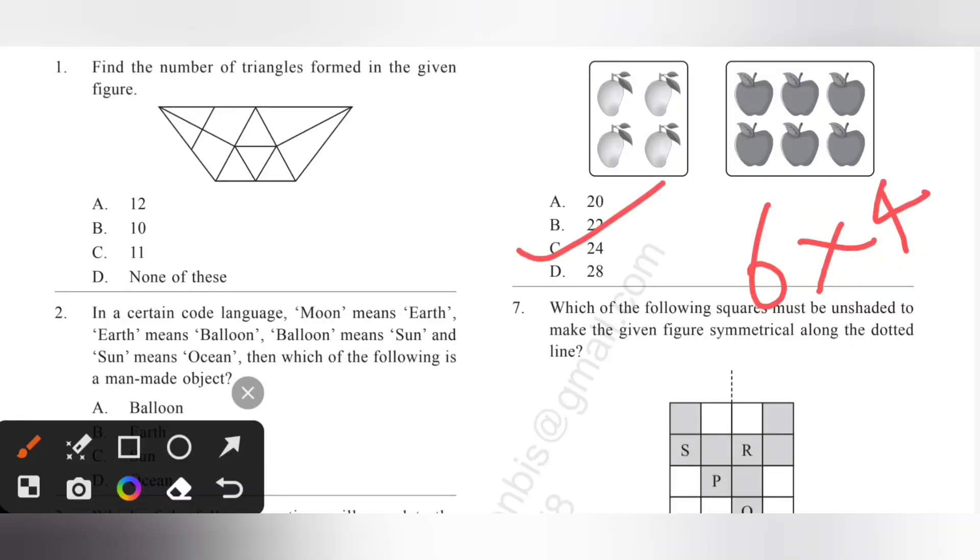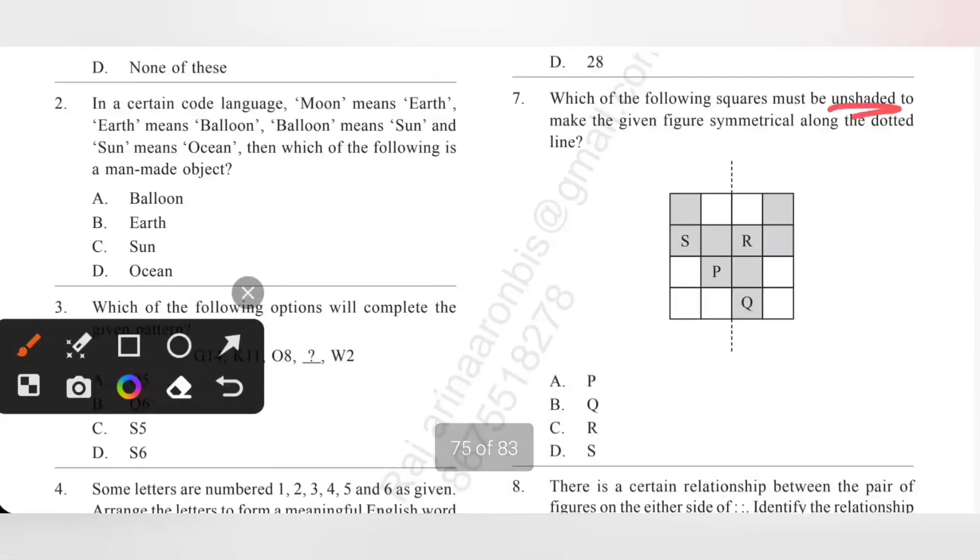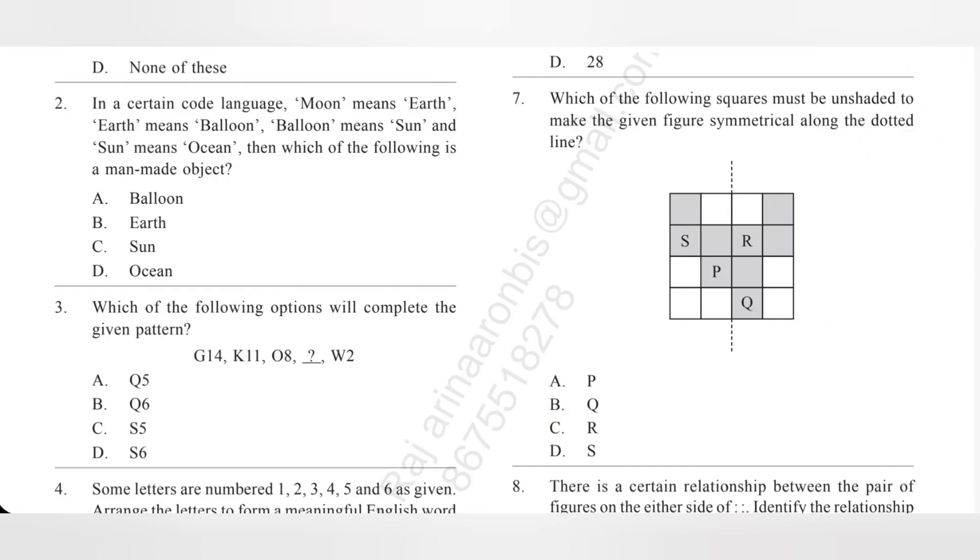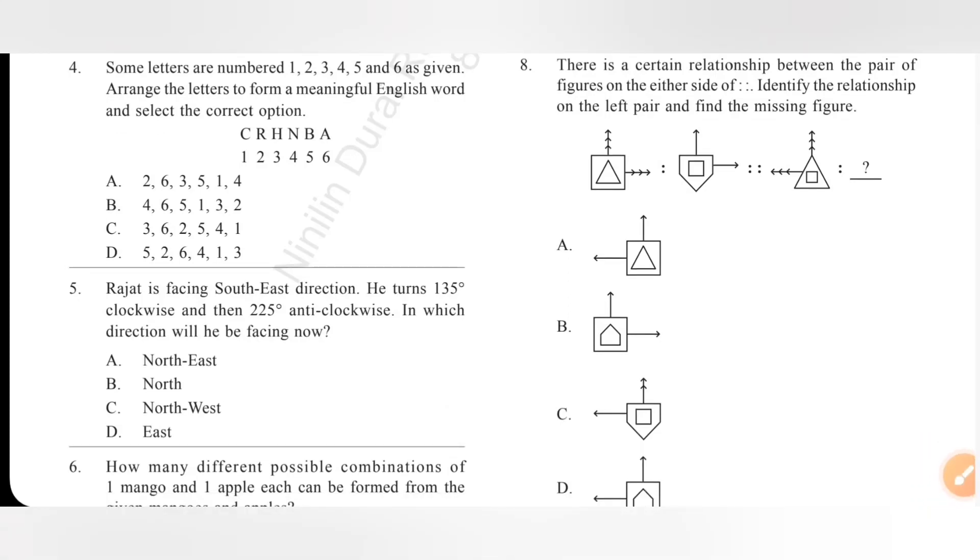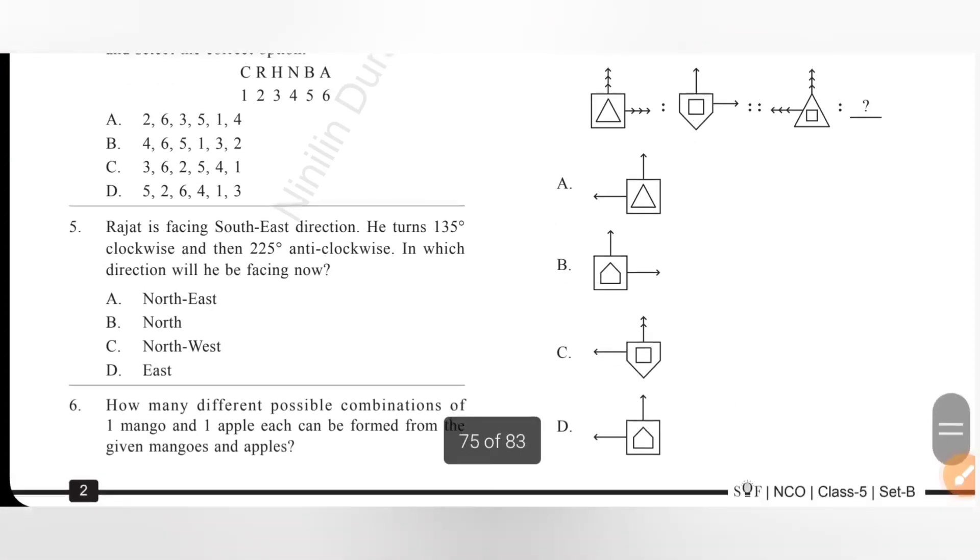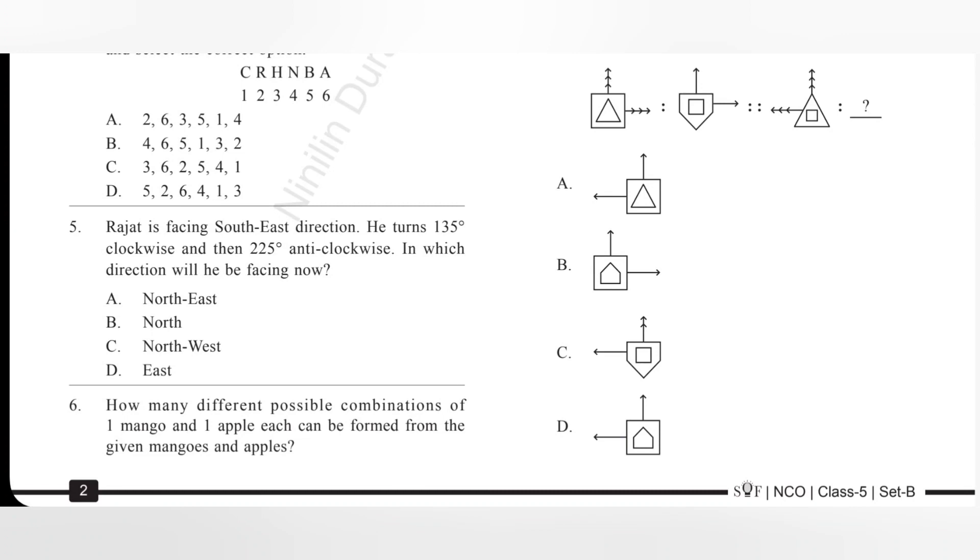Seventh one, which of the following squares must be unshaded to make the given figure symmetrical along the dotted lines? We must unshade Q. Then this figure will be symmetrical. Option B is the correct answer. Eighth one, there is a certain relationship between the pair of figures on either side. Identify the relationship on the left pair and find the missing figure. Please pause the video and try to find the answer. Actually option D is the correct answer.